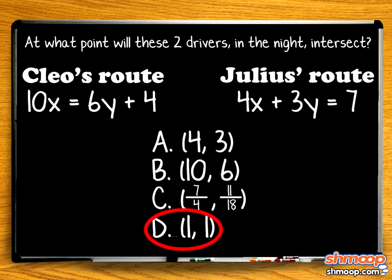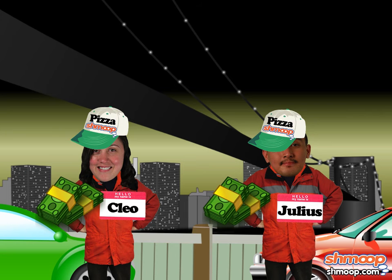Looks like the answer is D. So Julius and Cleo meet up at 1-1, trade pizzas, and deliver them with minutes to spare. Woohoo! What are you going to do with your pizza dough? There isn't any pep in these. All right. Bye, guys. Bye.